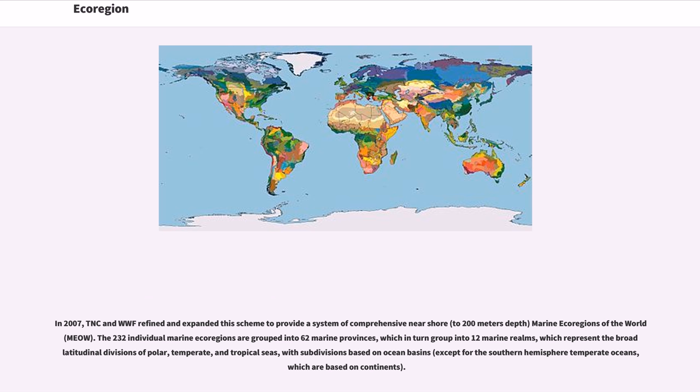In 2007, TNC and WWF refined and expanded this scheme to provide a system of comprehensive nearshore marine ecoregions of the world. The 232 individual marine ecoregions are grouped into 62 marine provinces, which in turn group into 12 marine realms, which represent the broad latitudinal divisions of polar, temperate, and tropical seas, with subdivisions based on ocean basins.